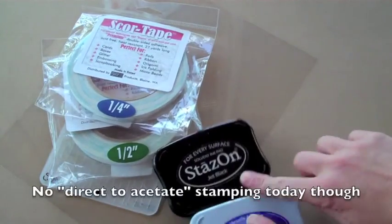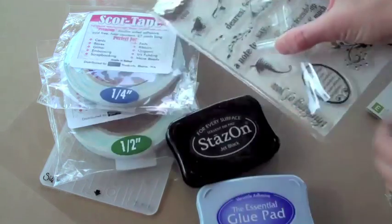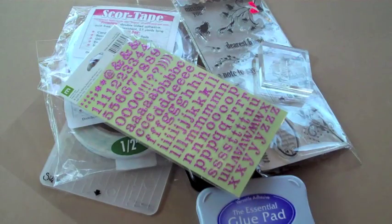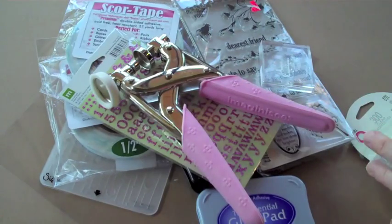Glue pad, StazOn pad, important for when you're stamping on acetate. Your stamps, stickers, and then I'm going to be using my Imaginus I Top Brad Maker just because that's lots of fun.